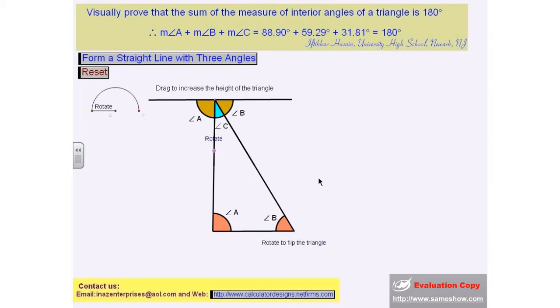In either case, the straight line stays the same and the sum remains 180 degrees. Though the measure of the three angles changes, the sum stays the same.